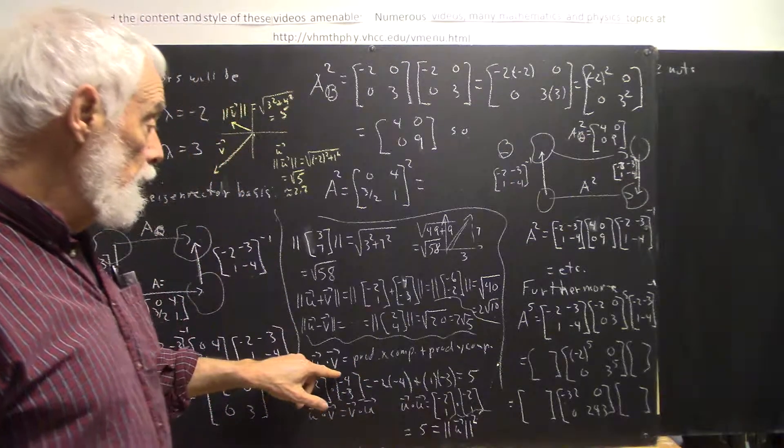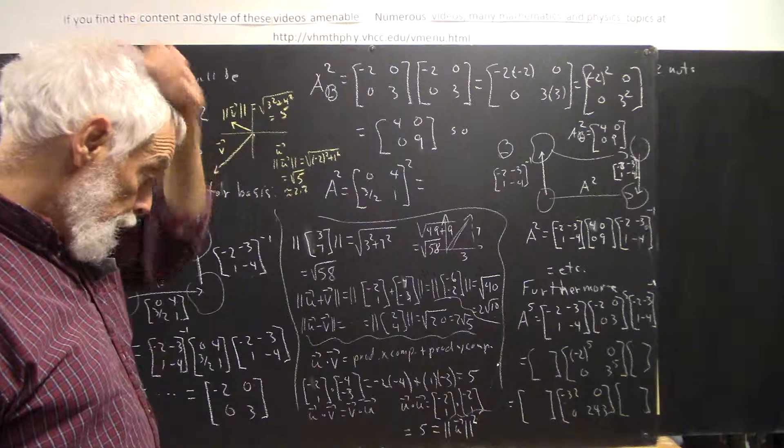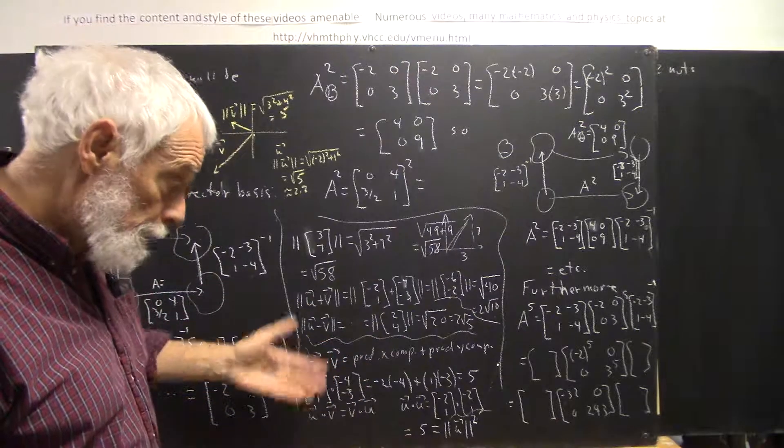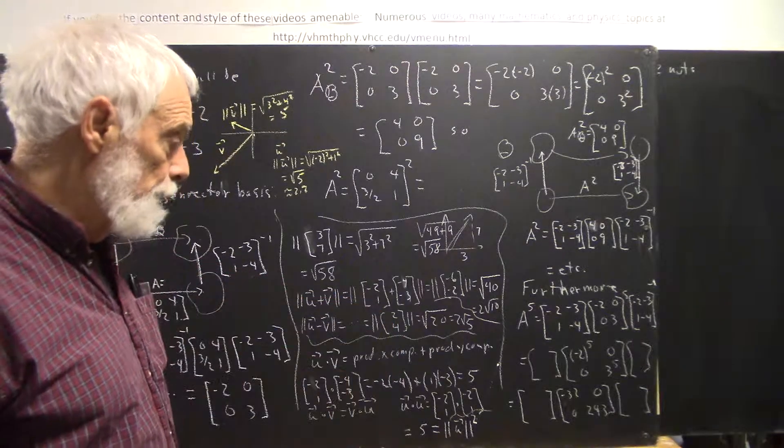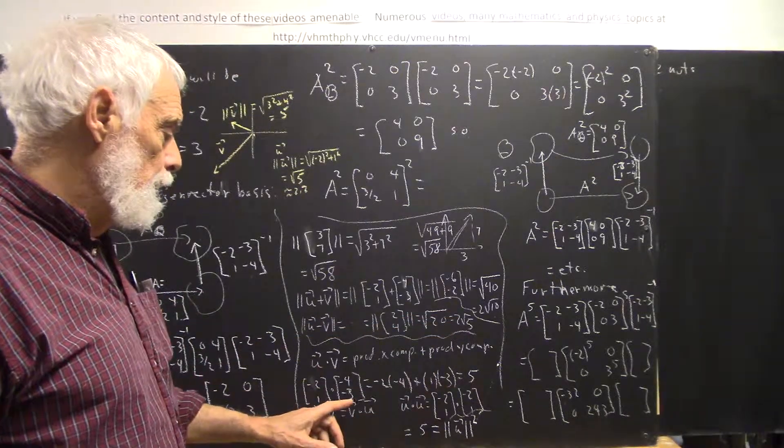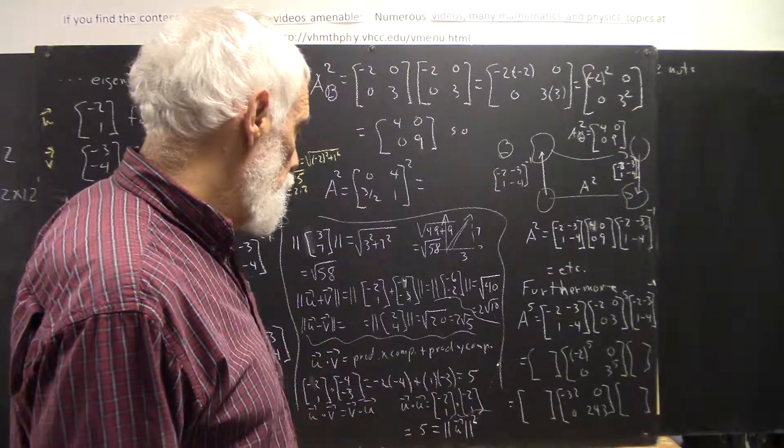So we calculate it. For u dot v, here is u, here is v. First component is -2, first component is -4, so the product of the x components in this case would be (-2) times (-4). The y components are 1 and -3, so we multiply 1 by -3. We add those up, we get 5.